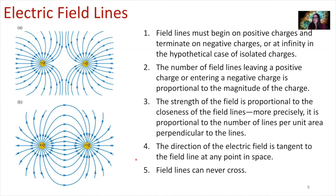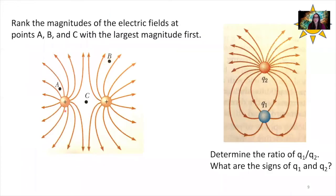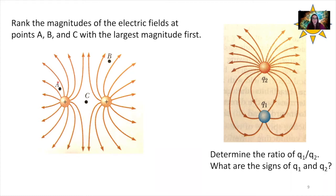We can also think about where the electric field is strongest — it's strongest closer to the charges and weaker where field lines start to diverge. With that in mind, the concept engagement question asks you to rank the magnitudes of the electric fields at points A, B, and C from largest to weakest for the image with two positive charges. Think about the closeness of the electric field lines at each point to determine the strength of the electric field at those locations.